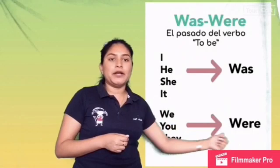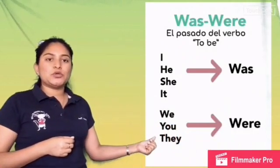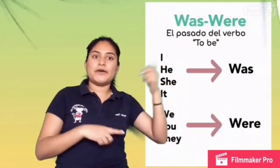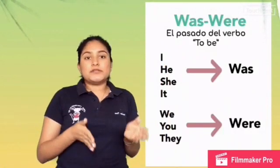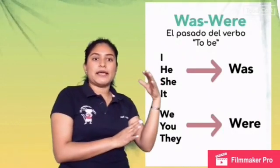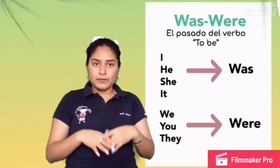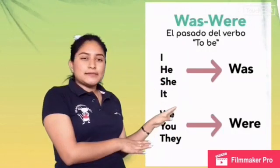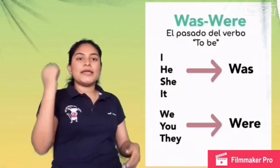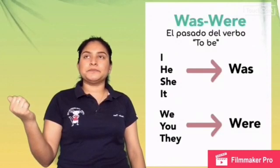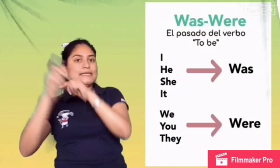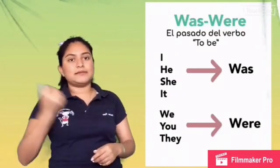And you have to use 'were' with we, you, and they. Do you remember 'there is' and 'there are'? We use 'there is' for singular — only one — and 'there are' for plural — more than one. It's the same situation. For example: I was at home yesterday.